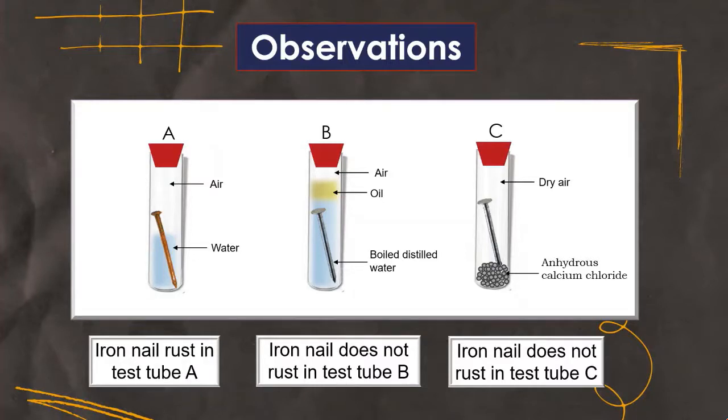in the test tube A because of the presence of the water and air. Hence, this activity proves that air and water are necessary for rusting of iron. This was about activity 3.14. Thank you so much for watching this video.